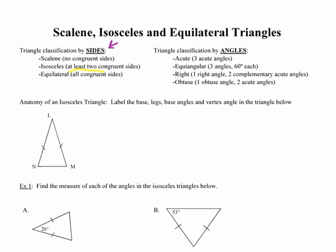Notice that every equilateral triangle is also isosceles because they have at least two congruent sides.